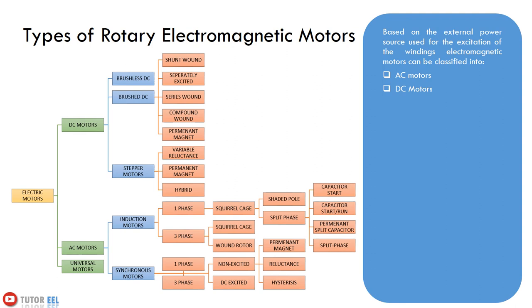The starting capacitor is only active when starting the motor and is switched off once the motor is rotating. The run capacitor is always active, or starting and run capacitors can be used in combination. The universal motor is also a kind of single-phase motor. These so-called universal motors are found mainly in power tools and can be supplied with both AC and DC current. In theory, series-excited DC motors can also be supplied with AC current.